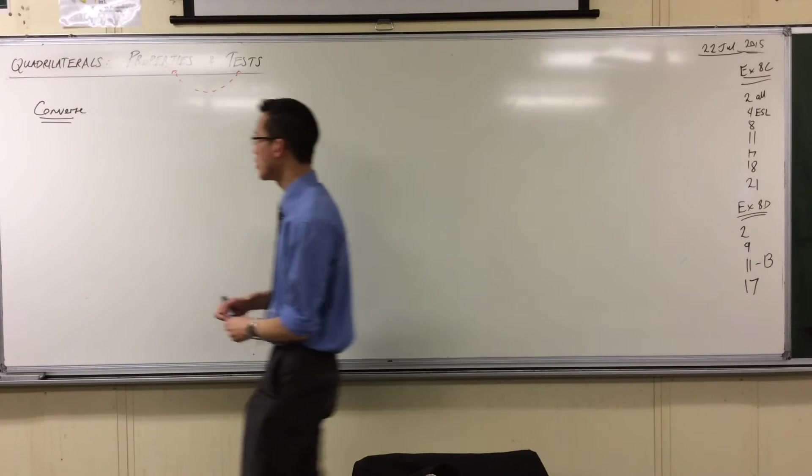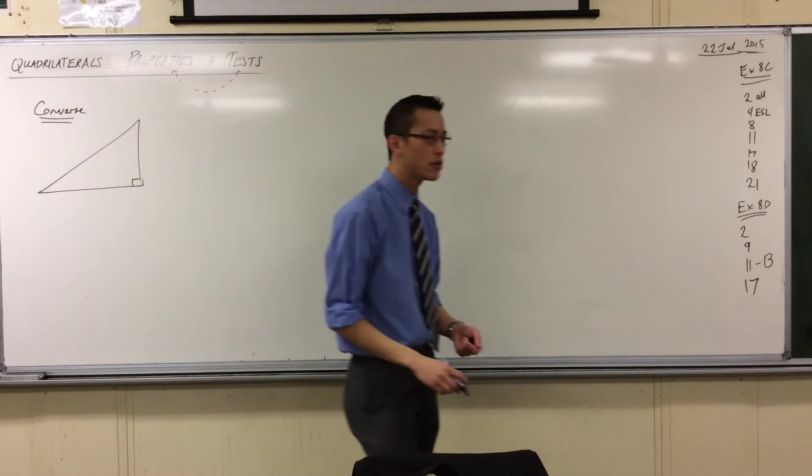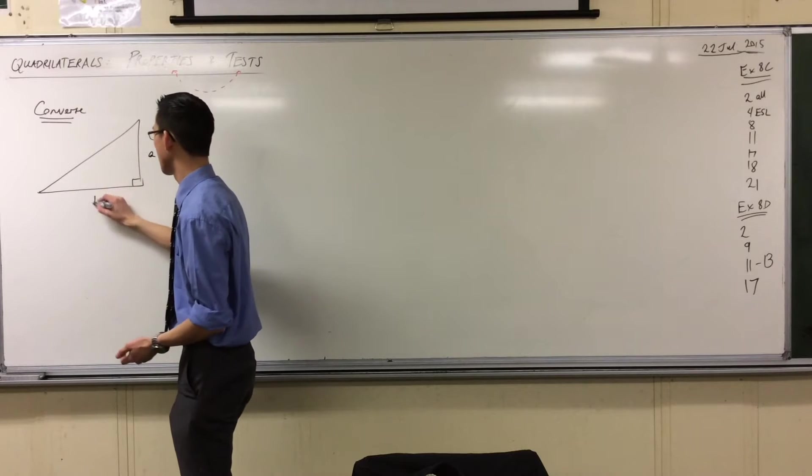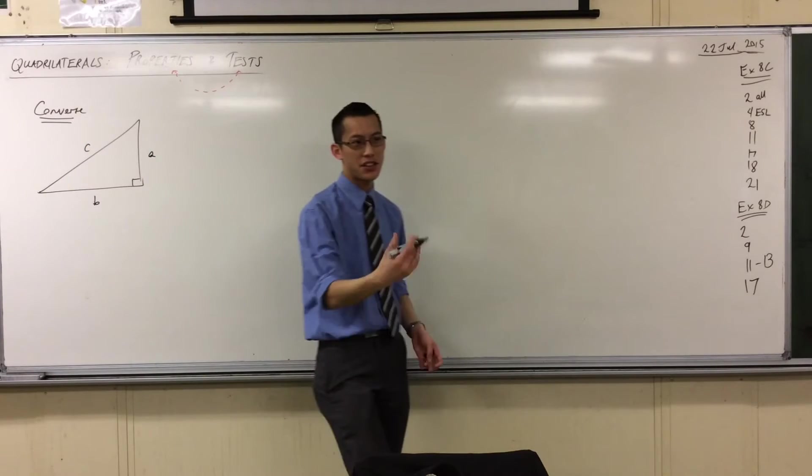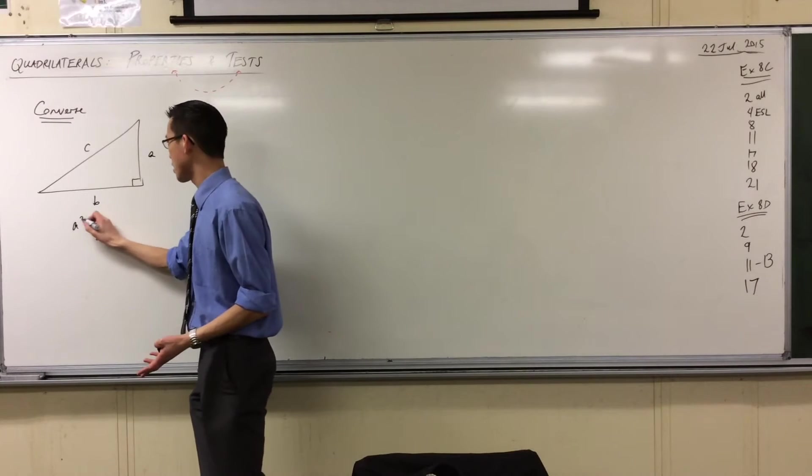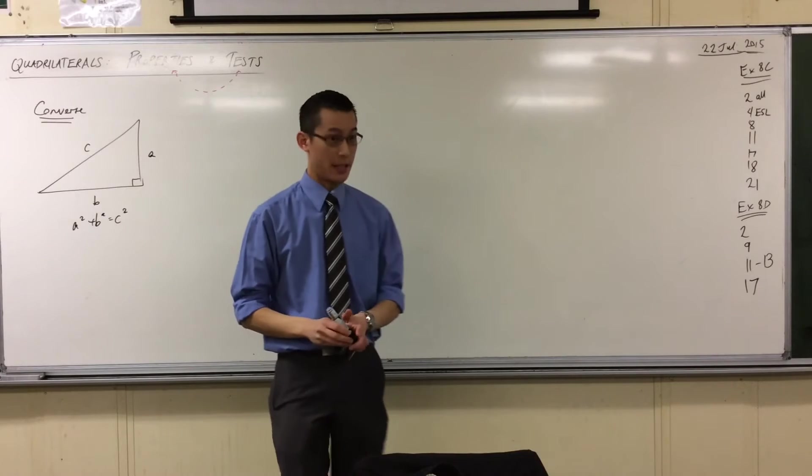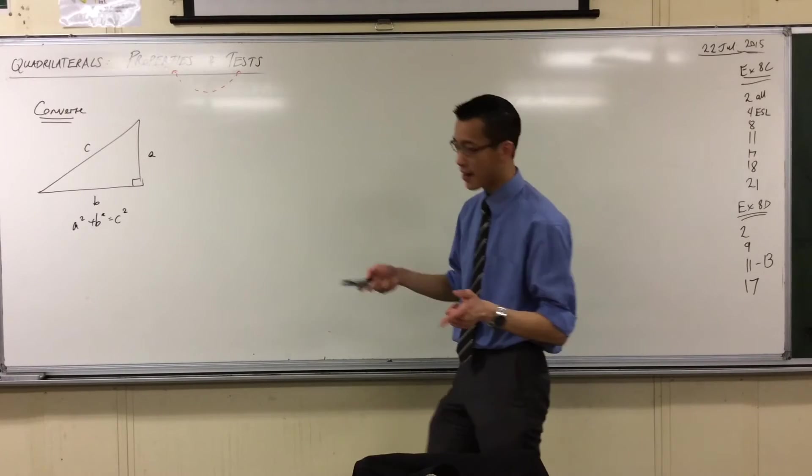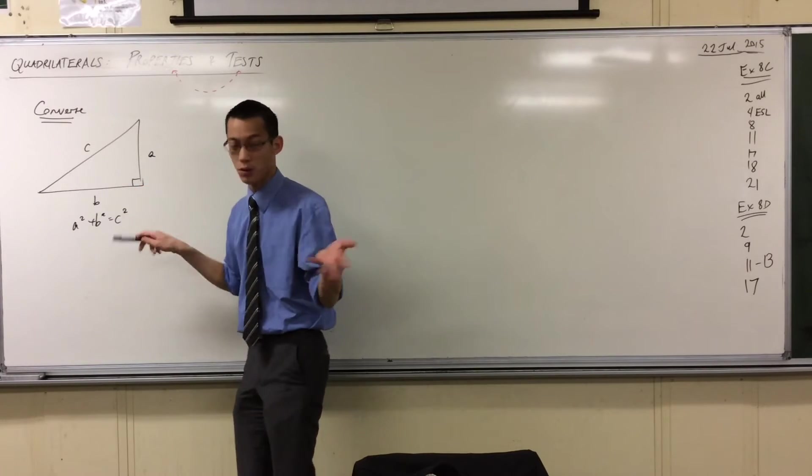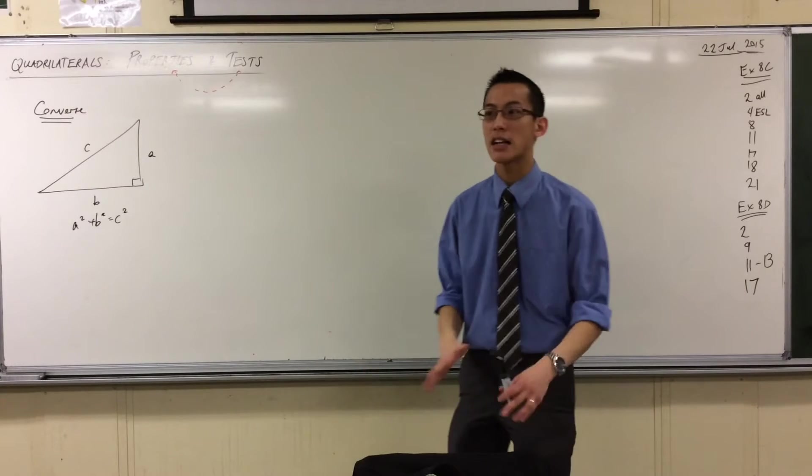So the most famous converse that we use and work with is this guy. If I tell you this is a right-angled triangle, and then we label the sides in such and such a way, then the statement that would come to mind immediately for you guys is A squared plus B squared equals C squared. So this is Pythagoras' theorem that the sum of the squares of the two shorter sides in a right-angled triangle is equal to the square of the hypotenuse in a right-angled triangle.